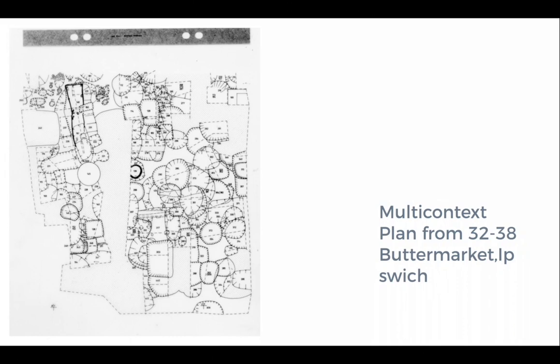This is another multi-context plan from the Archaeology Data Service — from a place called 3238 Butter Market in Ipswich. Here you can see how complex some of these more densely occupied sites can be, in that it records all of the different cuts seen at the site with slopes indicated as well.